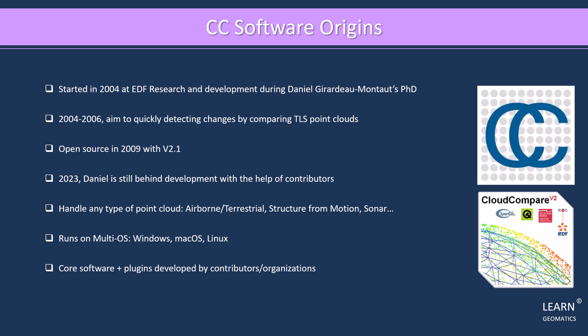Originally, Cloud Compare was designed to perform direct comparison between dense 3D point clouds, and it relies on a specific Octree structure that enables great performance when performing this kind of task. It was meant to deal with huge point clouds on a standard laptop, typically more than 10 million points, which was considered huge in 2005.